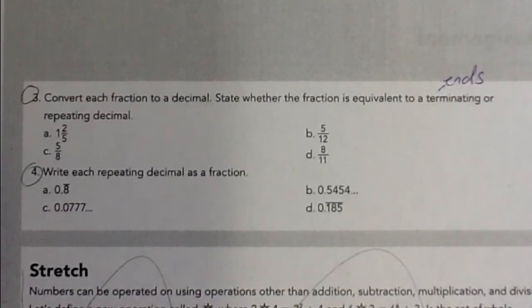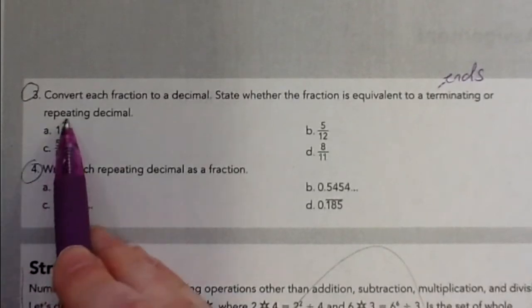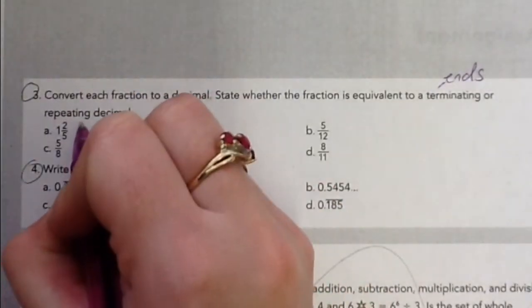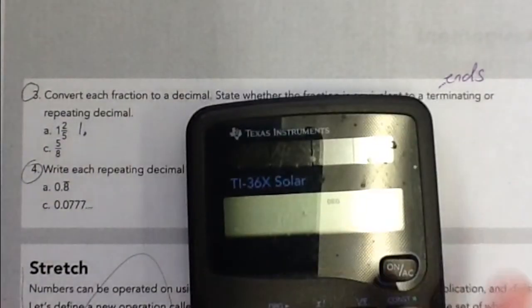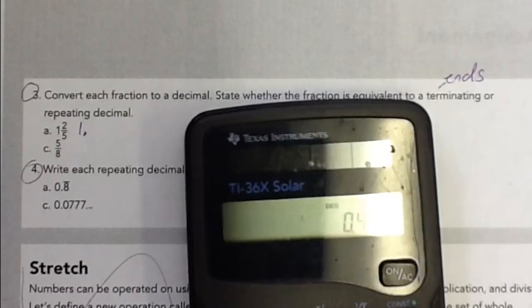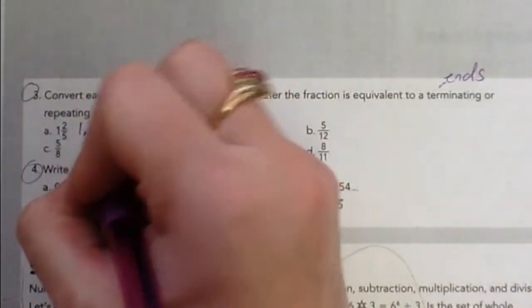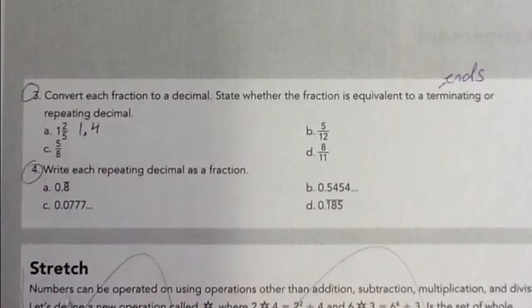The quickest way to change these into a decimal is to divide the numerator by the denominator. So 1 and 2 fifths, that's going to be 1 point something. We need to figure out what the 2 fifths is. So we'll do 2 divided by 5, and it's 0.4. So 1.4 is equivalent. Now is that terminating or repeating? Because it ends, it's not 0.444444 on and on. This is definitely terminating.